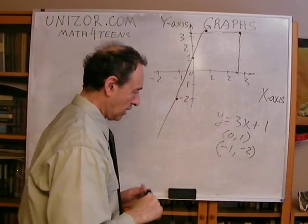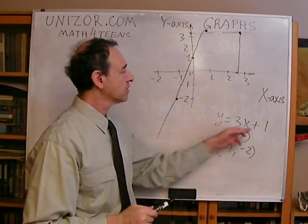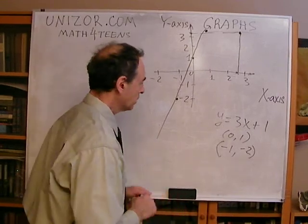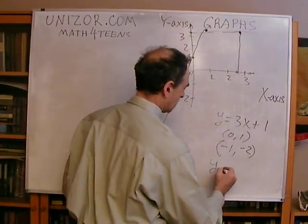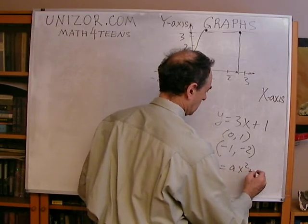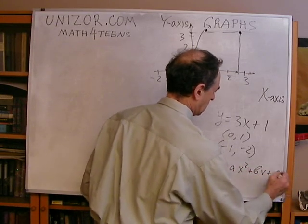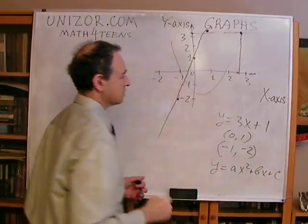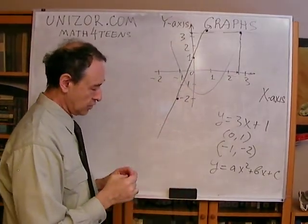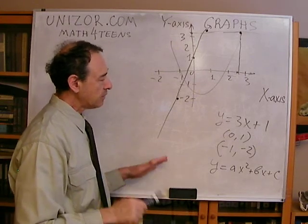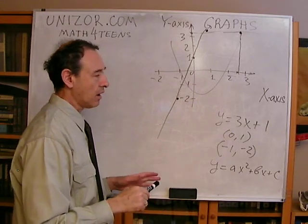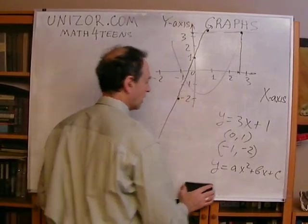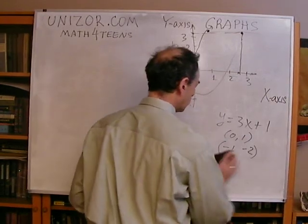We can prove that a polynomial of the first degree is a straight line on the graph, or a polynomial of the second degree would be a parabola. There are many different things you can do with graphs, but I would like to concentrate more on qualitative characteristics of the graph — and here is what's very important when you're dealing with graphs.